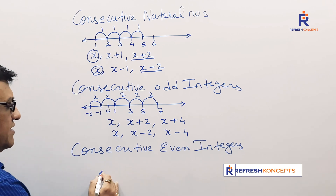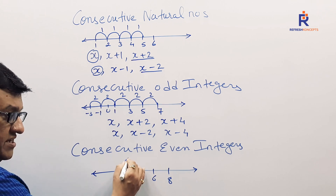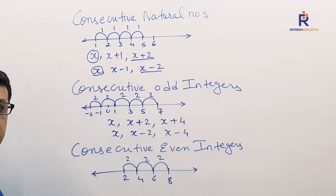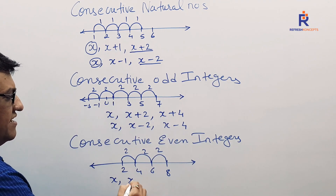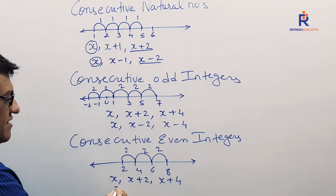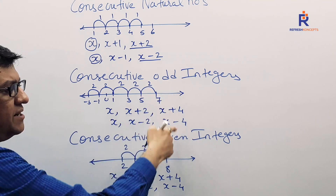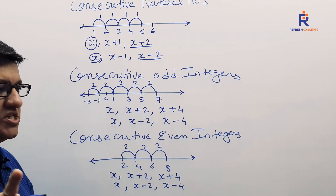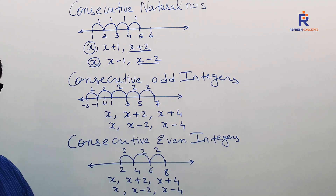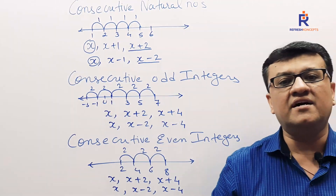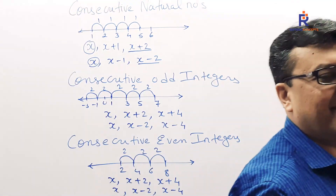Now even integers — same lines: 2, 4, 6, 8. The difference is 2. So three consecutive even integers are X, X plus 2, X plus 4, or X, X minus 2, X minus 4. Whether even or odd, the consecutive numbers follow the same pattern: X, X plus 2, X plus 4 or X, X minus 2, X minus 4.